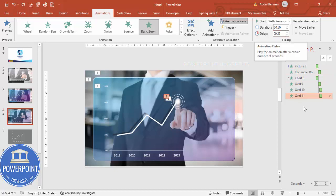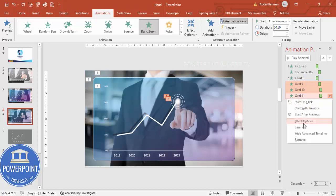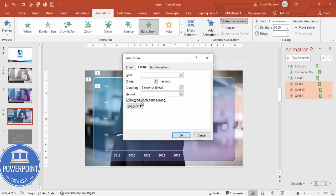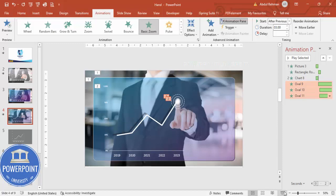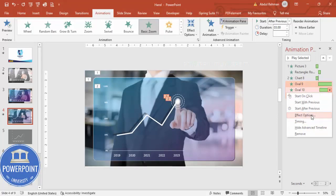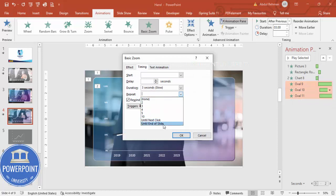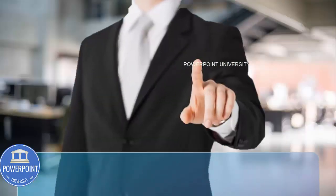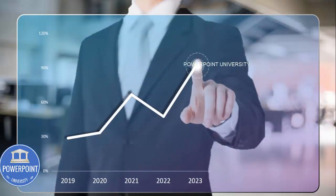Select the ovals, right-click and go to Effect Options. Under Timing, set the duration to Slow and set Repeat to Until End of Slide, or choose Rewind When Done Playing. Adjust delays as needed so the timing flows naturally. Preview the full animation to check how everything looks and refine as needed.